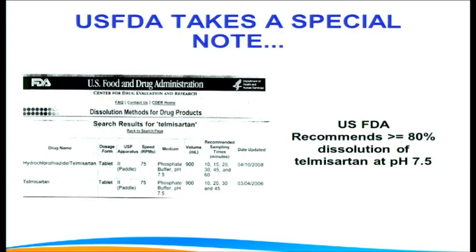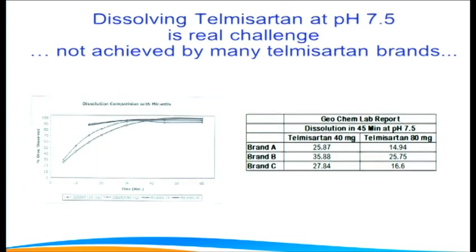Moreover, USFDA has given a special recommendation that telmisartan should have more than 80% dissolution or solubility at intestinal pH 7.5 within 45 minutes after oral administration. Achieving this dissolution of telmisartan at pH 7.5 is a real challenging issue, not achieved by most ordinary telmisartan products available in the market.